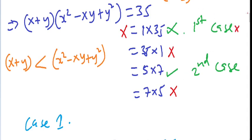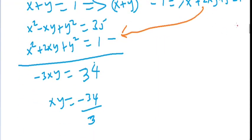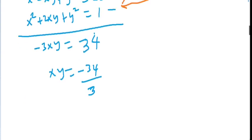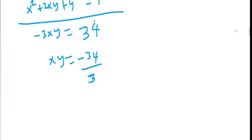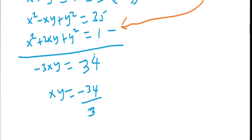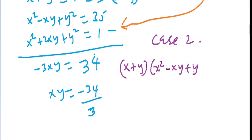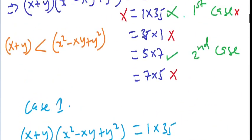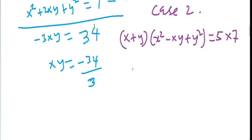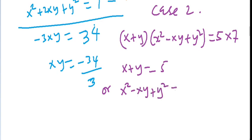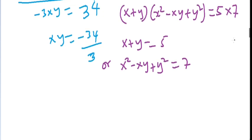Now let us move on to Case 2. In Case 2, x plus y times x squared minus xy plus y squared equals 5 times 7. This means x plus y equals 5 and x squared minus xy plus y squared equals 7.